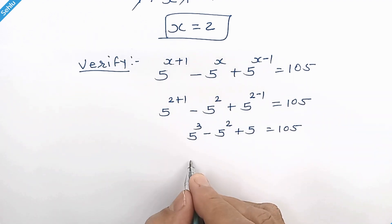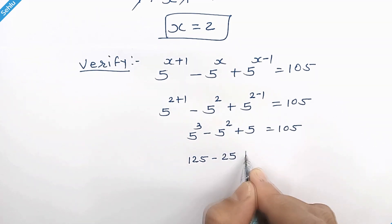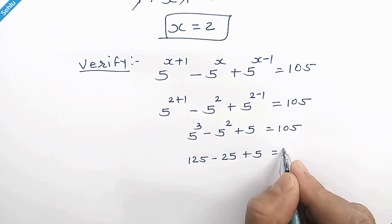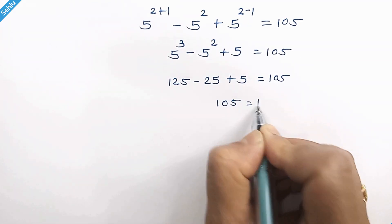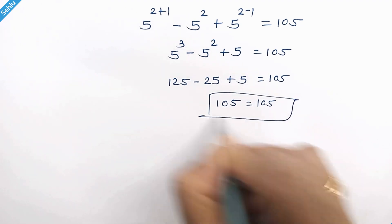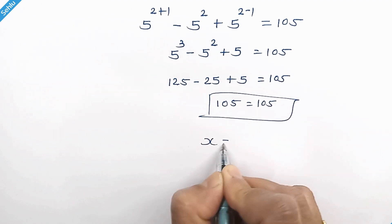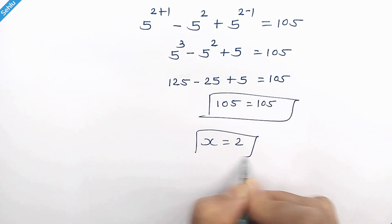5 cubed is 125, which gives us 105. So x equals 2 is the right answer.